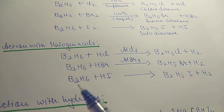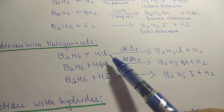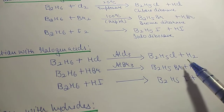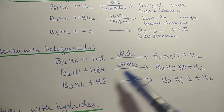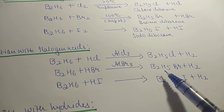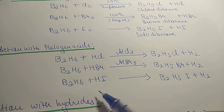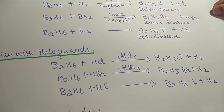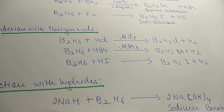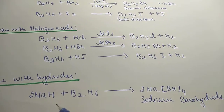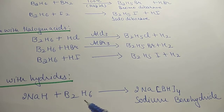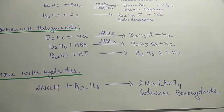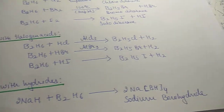Action with halogen acids: B2H6 reacts with HCl in the presence of aluminium chloride to give chlorodiborane plus hydrogen. B2H6 reacts with HBr in the presence of aluminium boride to give bromodiborane plus hydrogen. B2H6 reacts with HI to give iododiborane plus hydrogen. Action with hydrides: NaH sodium hydride reacts with B2H6 to give two molecules of sodium borohydride NaBH4.